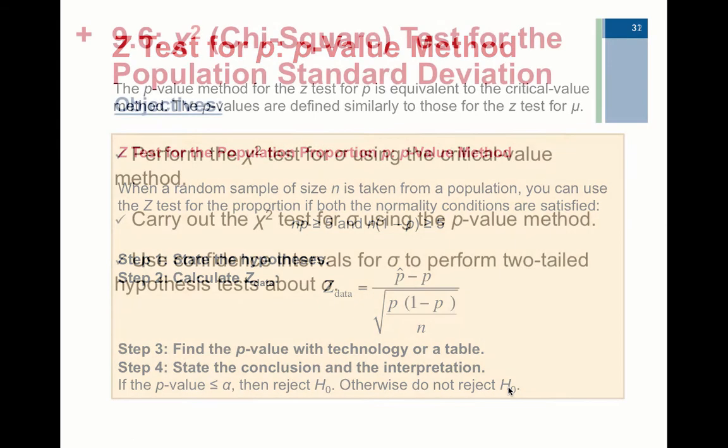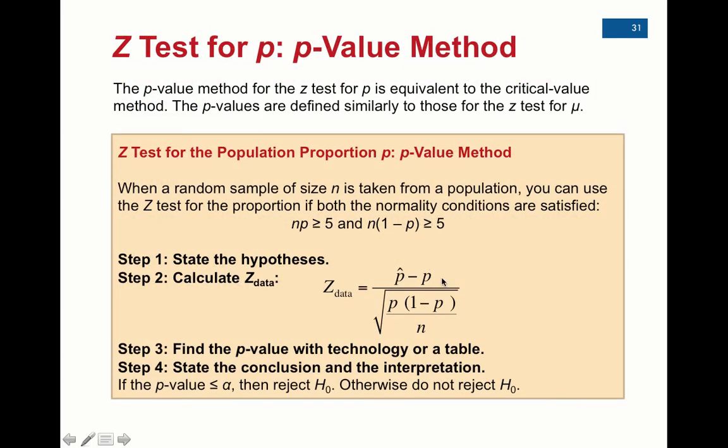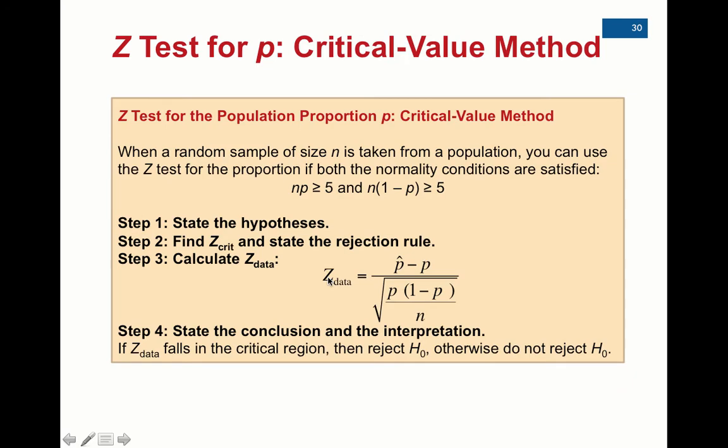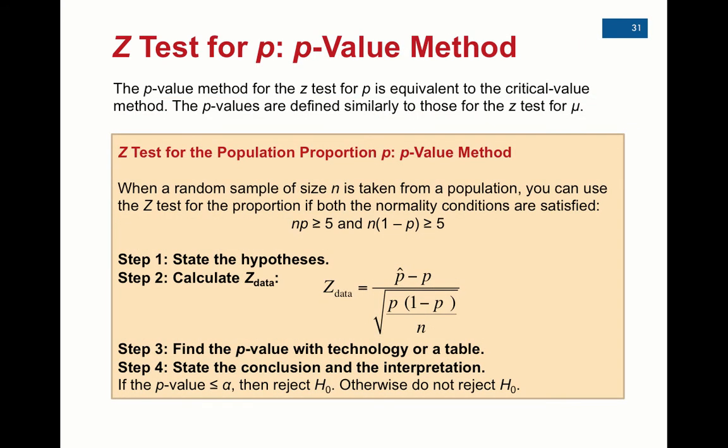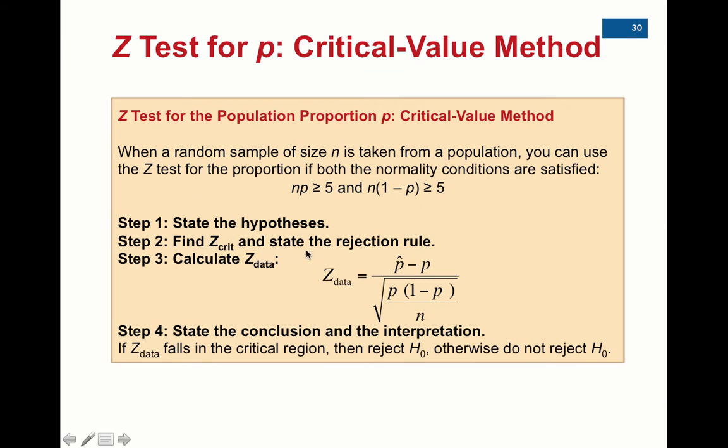So that's really it. The only thing new is the formula here. We're still going to follow the same steps. You can pick the critical value method if you like, or the p-value method. The critical value method involves looking up z-crit using inverse norm, then calculating the z-data and comparing that to z-crit to see if it falls in the rejection region.